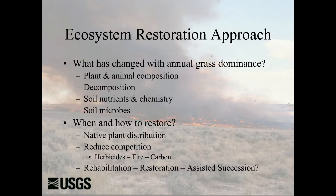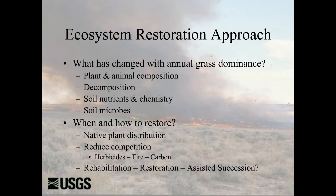The restoration approach we're taking — looking at the full set of ecosystem components — examines plant and animal composition, decomposition, soil nutrient chemistry, and soil microbes within the system, and asks when and how to restore these systems. Native plant distribution is an important component — we try to match those sites. Then hopefully we go through and reduce the competitiveness of cheatgrass. Generally that's been associated with herbicide applications, but we're now focusing more on prescribed fire for cheatgrass management, as well as applications of carbon to the soil.